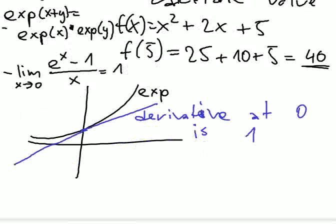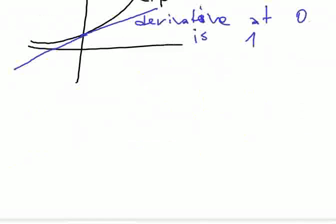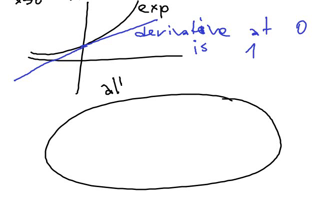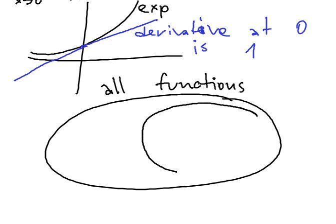Now, what comes is the following idea. Let's say this is the space of all functions. I would like to not work with exact things, because exact things are very hard to handle, so let's approximate. Let's approximate with some simple subspace.